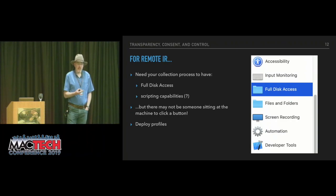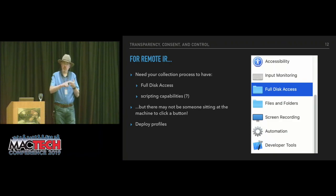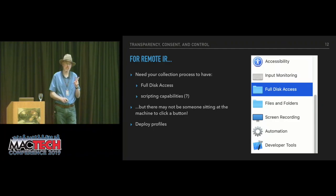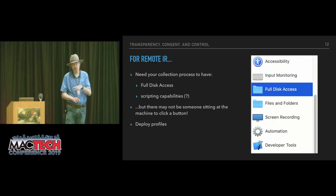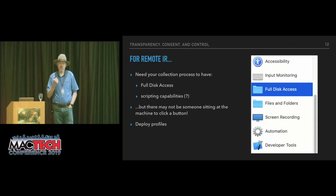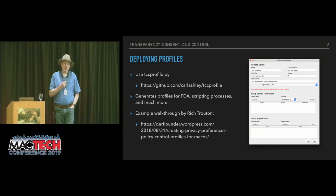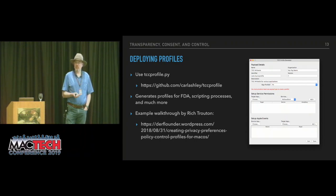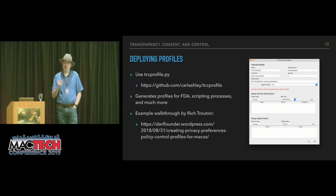If you're doing remote IR, you're going to need to deploy a Privacy Preferences Policy Control Payload — PPPCP for short. The easiest way to do this, if you've never done it before, is to use a script called tccprofile.py, made by Carl Ashley — it's up on GitHub, free to download and use. This will generate the profiles for you; you just have to tell it what to generate. There's a very nice walkthrough from Rich Troughton that will walk you through the process, and you create your profile and deploy it through your MDM.